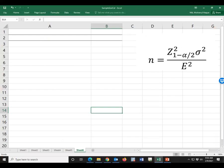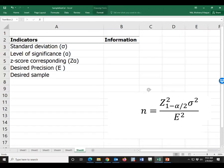Now, go to the excel file. The necessary information: standard deviation, level of significance, Z score, and desired precision, we have to give these values.